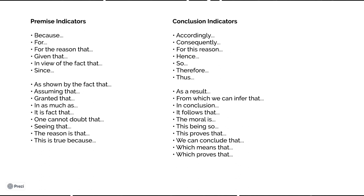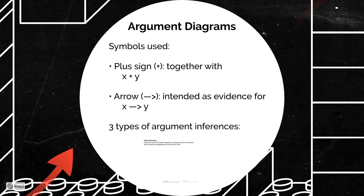Conclusion indicators most often come in the form: so, therefore, and thus. But conclusions can also be signaled with words or phrases like: accordingly, consequently, for this reason, hence, as a result, from which we can infer that, in conclusion, it follows that, the moral is, this being so, this proves that, we can conclude that, which means that, or which proves that.